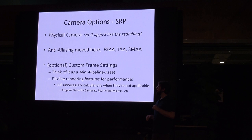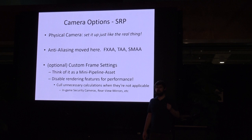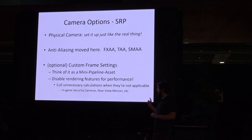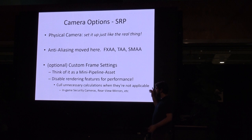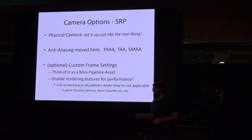Custom frame settings are at the bottom of the camera settings list. Think of this as a mini-pipeline asset. In many applications — the rearview mirror of a racing game, cube maps being rendered, in-game security cameras, billboards, live replays — you don't need every single rendering feature for those cameras. You might notice that rearview mirrors in racing games won't have shadows, screen space occlusion, or screen space reflection — that's to make them super cheap to render. Go through this, enable what you need, disable the rest, cull anything not needed by that camera, especially auxiliary ones like security or rearview cameras, and you will see decent performance gains.